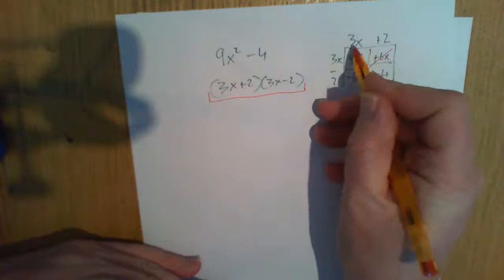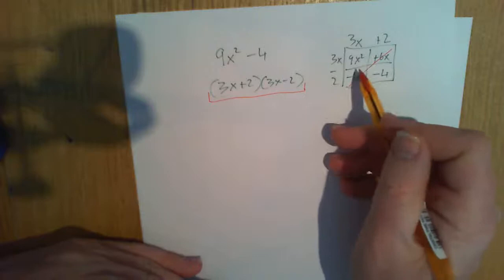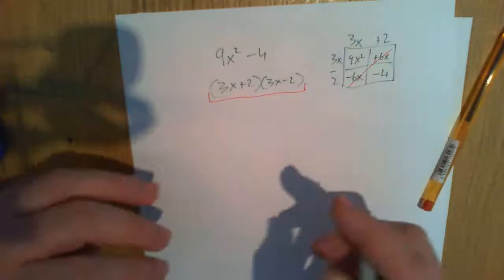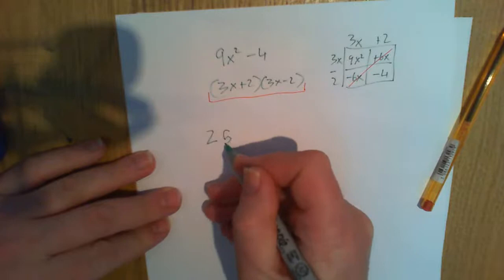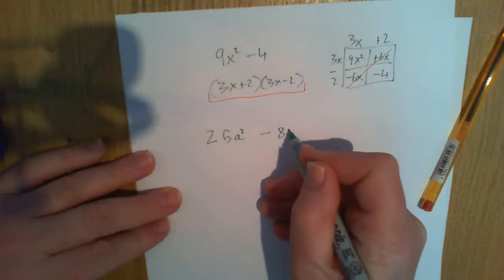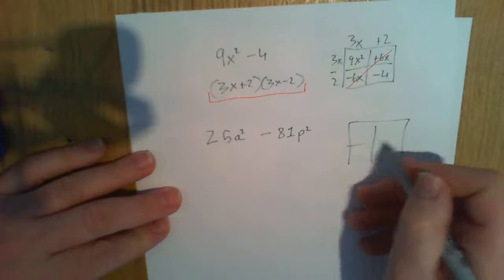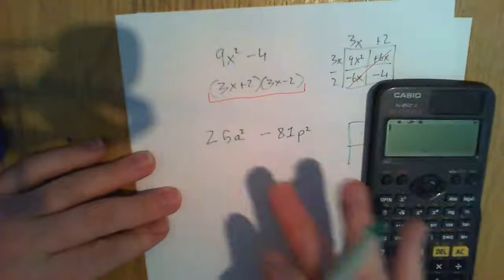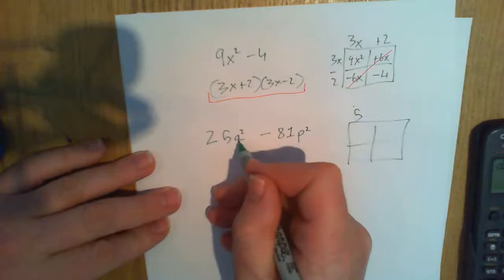Have a look at this one. 25a squared minus 81p squared. This time, I'm just going to fill it out. Use your calculator. Square root of 25 is 5. What's the square root of a squared? Single a. Square root of 81 is 9. Square root of p squared is p. So, that must mean there's a 5a here and a 9p here.